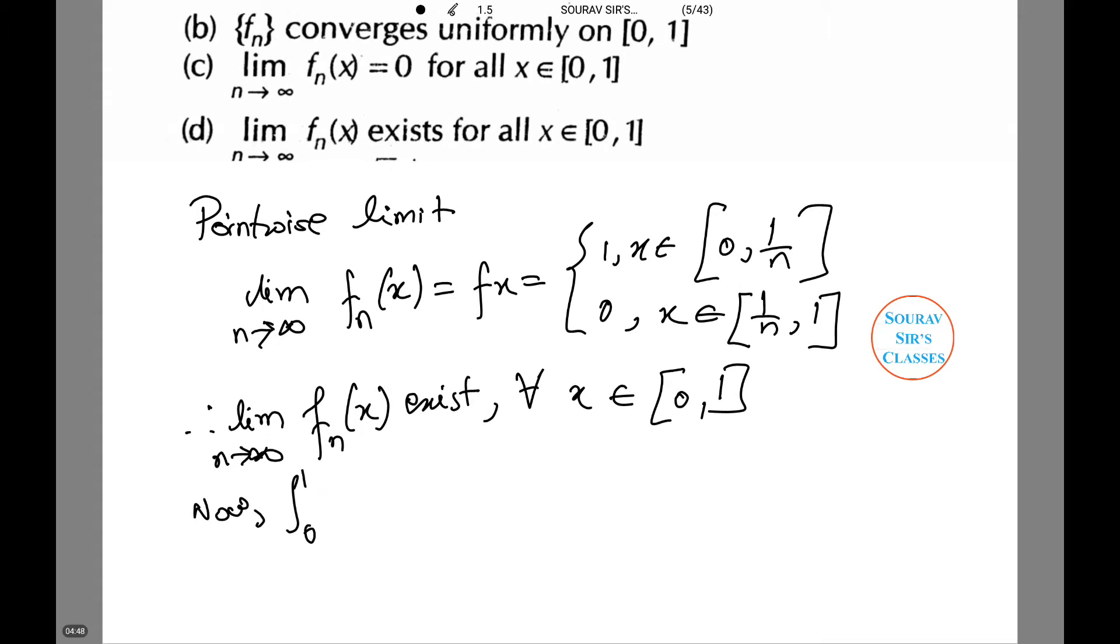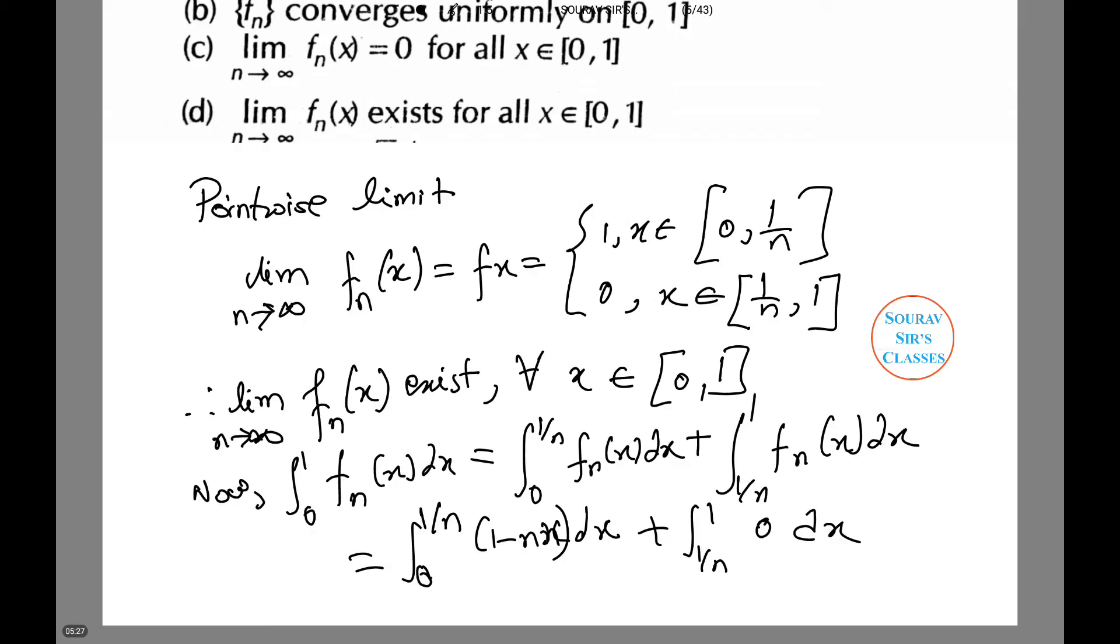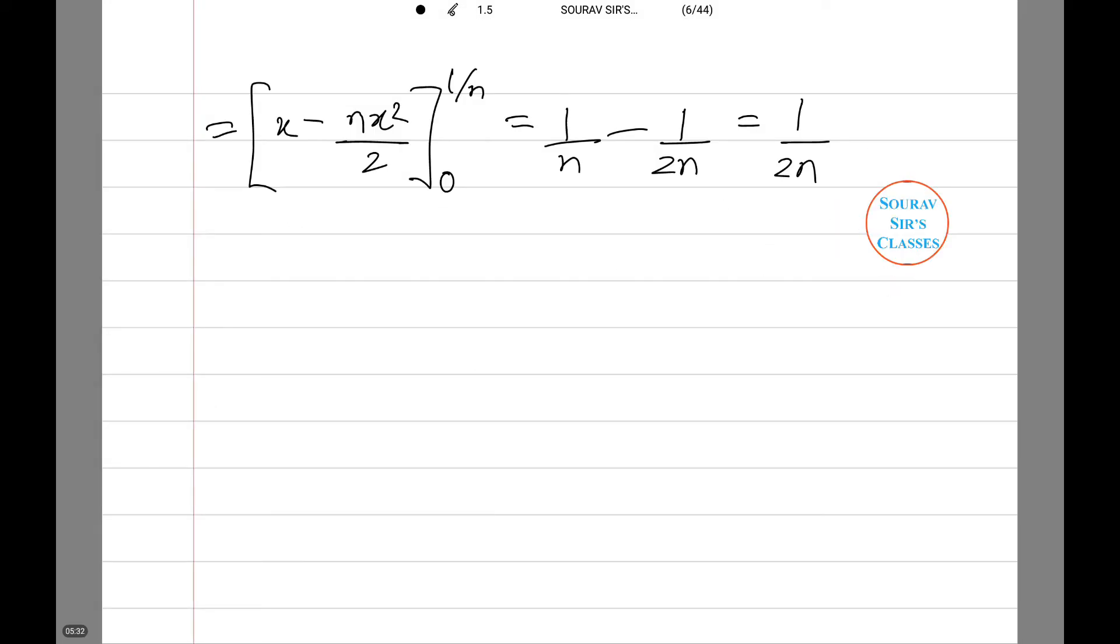Now integrating from 0 to 1, f_n(x) dx equals integral from 0 to 1/n of f_n(x) dx plus integral from 1/n to 1 of f_n(x) dx. This upon solving comes to [x minus nx²/2] evaluated from 0 to 1/n, which equals 1/2n.